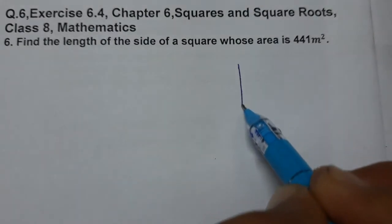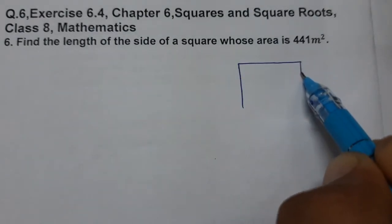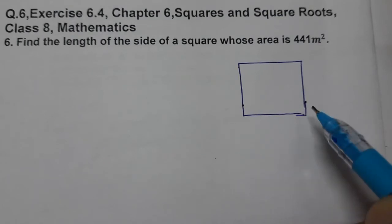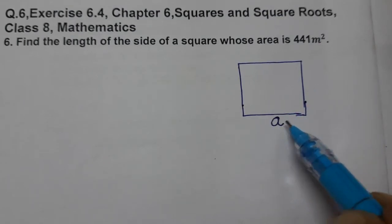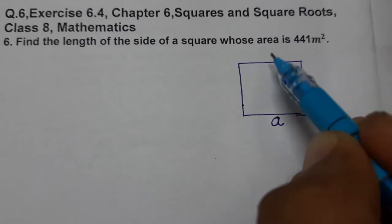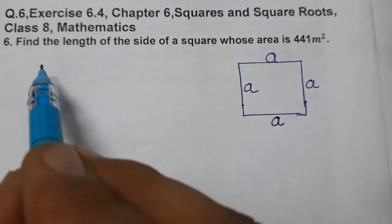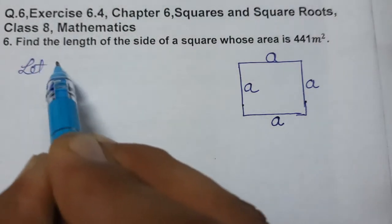So a square is given to us and we need to find the side of the square. This is a side. Let the side be a, and we know the sides of a square are equal.